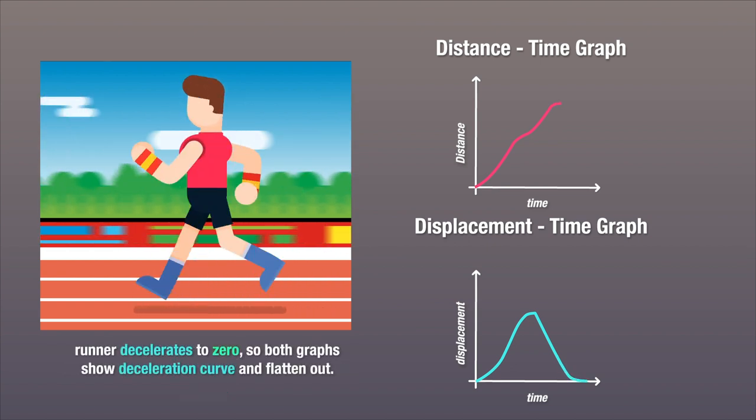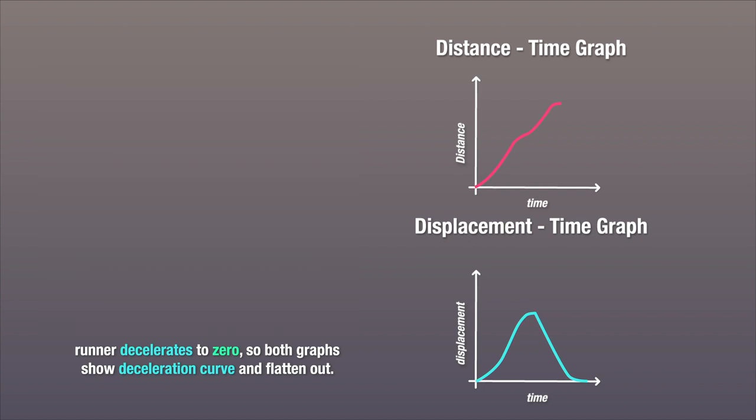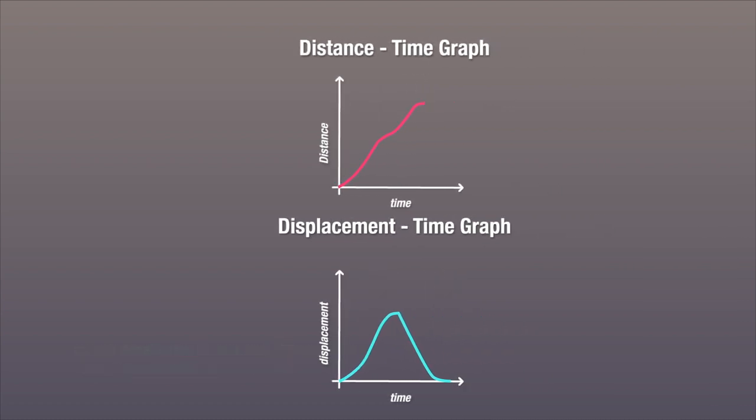Now, as she arrives at this starting point again, both graphs level off again. The only difference is that for the distance time graph, the leveling off happens at a value of twice the length of the track, because she's run up at once and then back down once. Whereas for the displacement time graph, the leveling off happens at zero, because she's back exactly at her starting or reference point. So the net displacement is zero.